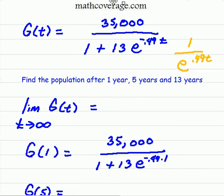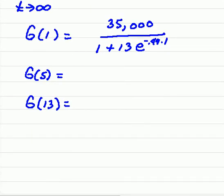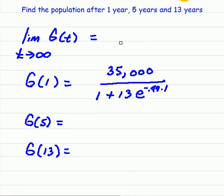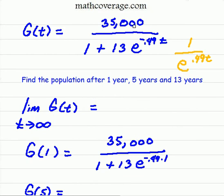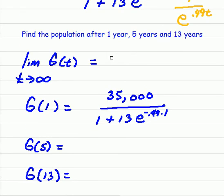So thinking now about this limit, once again, as t goes to infinity, then the whole thing is going to go to 35,000. And so what does this mean? Well, this means that over the long term, as time goes to infinity, the population reaches 35,000.